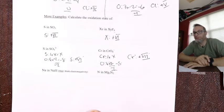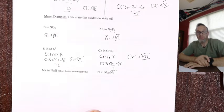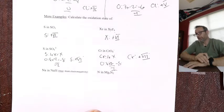Hexavalent chromium in Erin Brockovich is chromium with a plus six oxidation state — perhaps as CrO₃⁻.